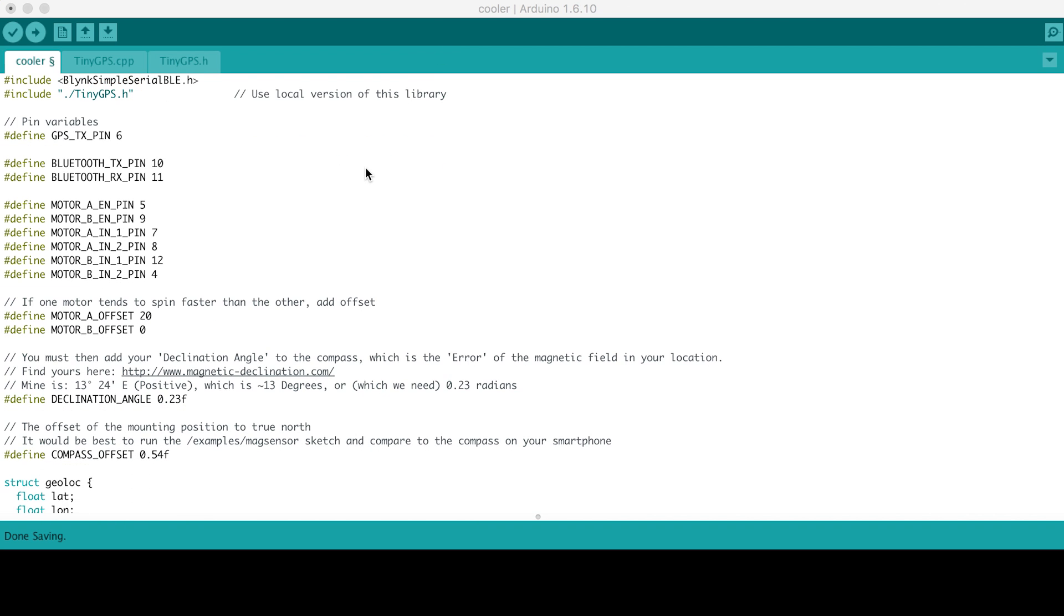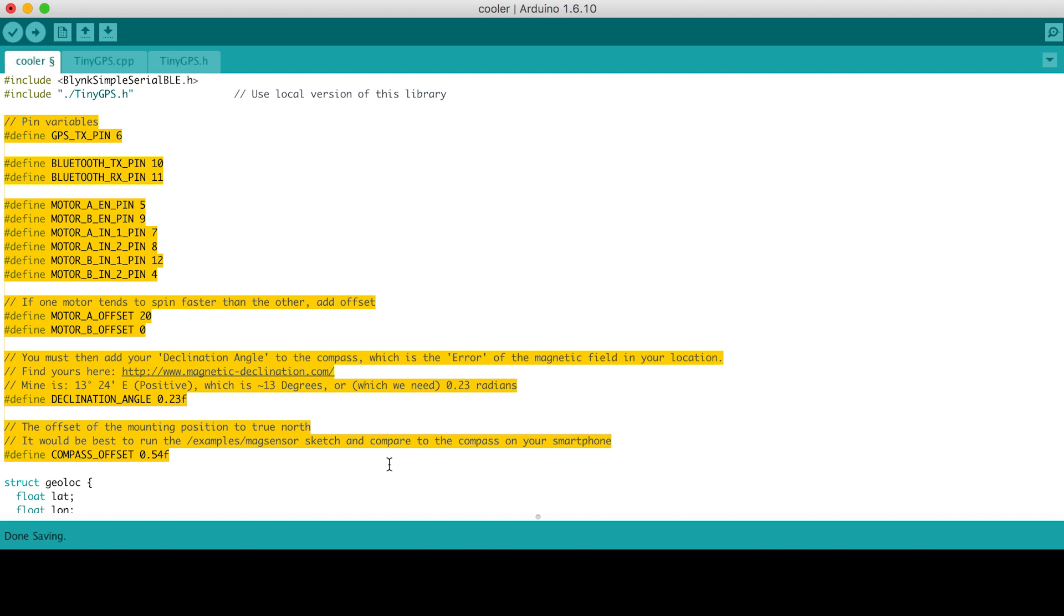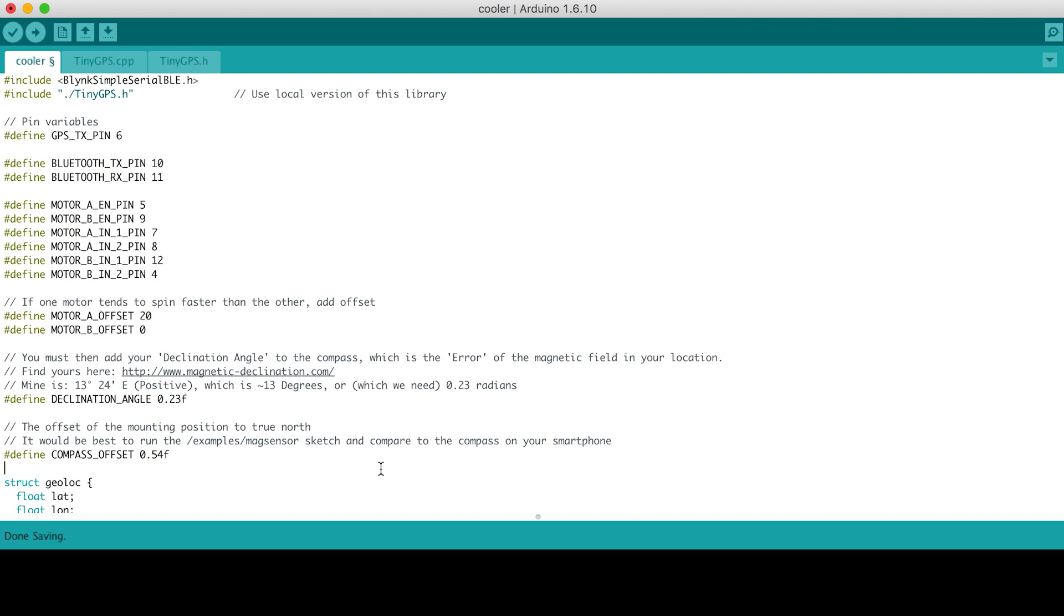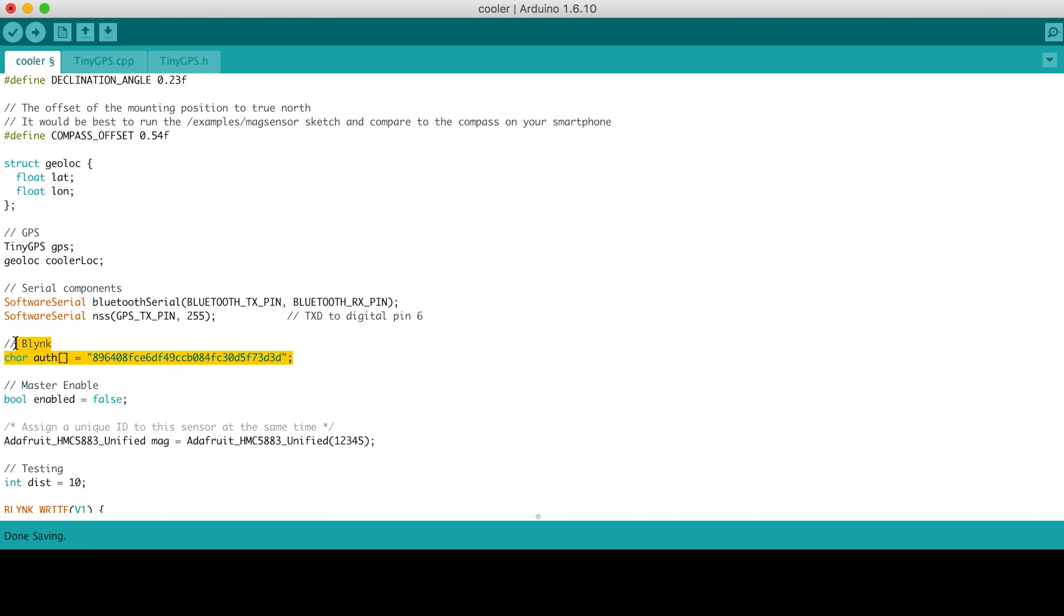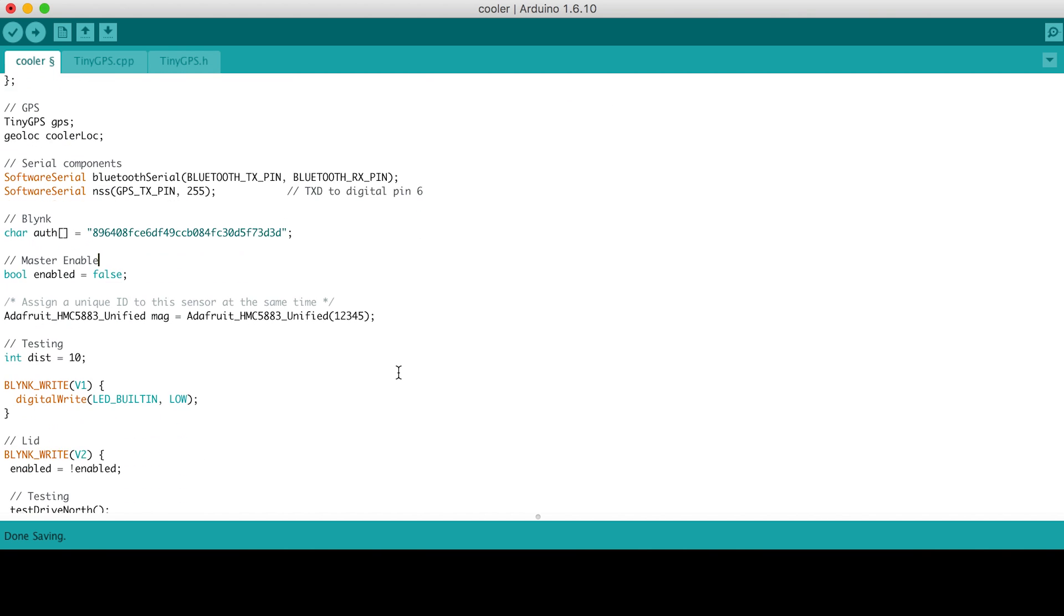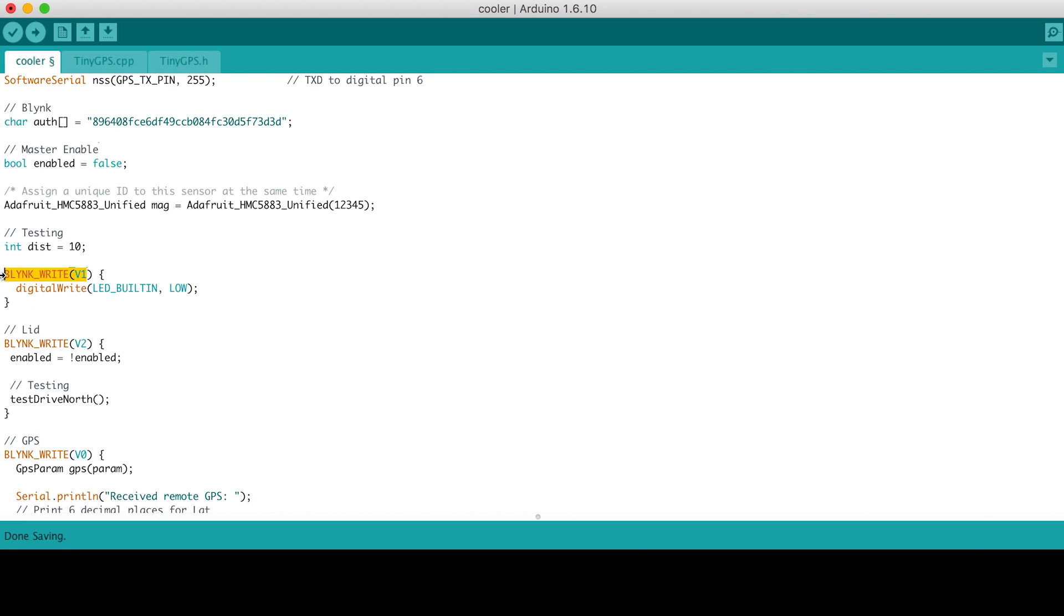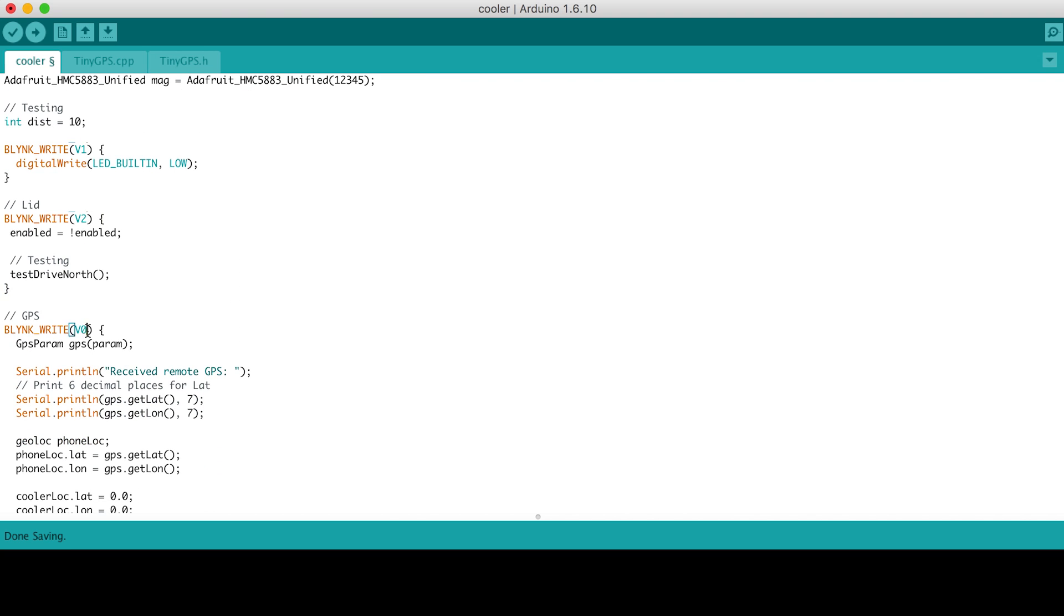At the top we have several variables defined for the jumper wires, which attach to our ports on the Arduino Uno. You can change these for your application, say if you want to move the ports around or whatever. Down here we have a blink auth token. So when you generate your blink project, you'll want to get that token and replace it here. Down here I have interrupts for all of the different switches as well as the GPS streaming. You want to change these to correspond to the virtual pins that you set up in your blink project.